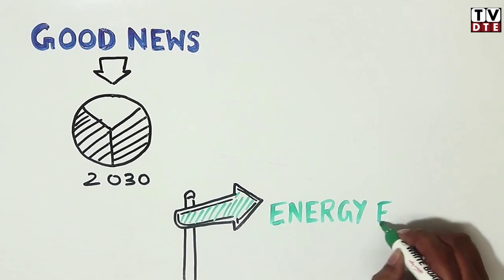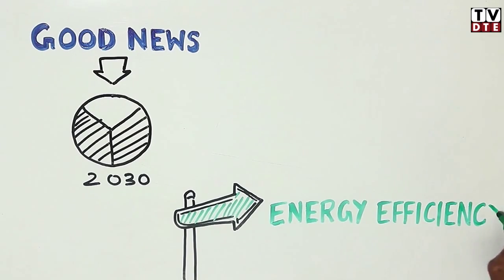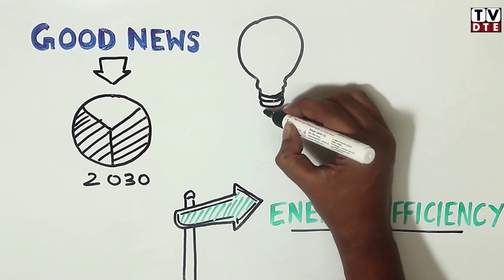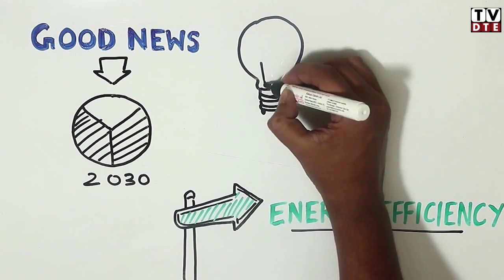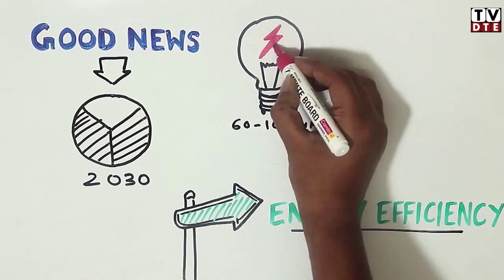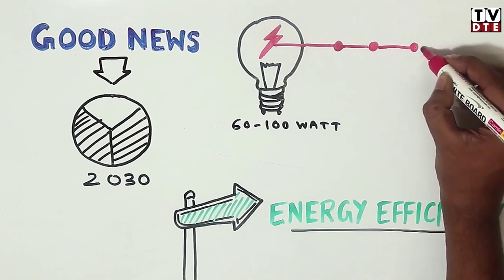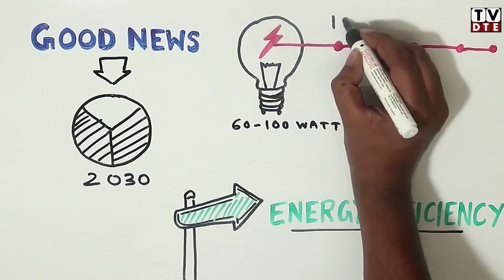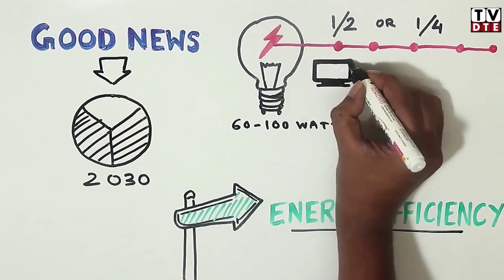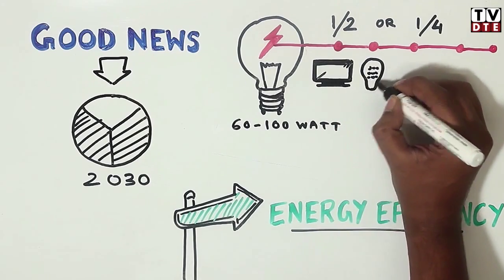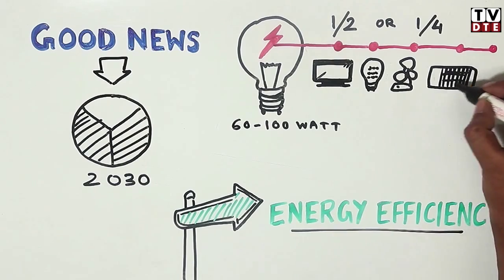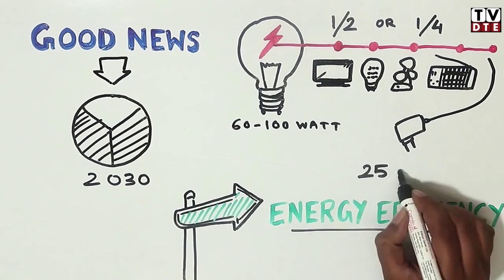The right course to take is towards energy efficiency. We have all used incandescent bulbs to light up our homes. Typically, 60 and 100 watt bulbs are used for home lighting. But today, it is possible to use a motley array of devices at half or one-fourth the power of an incandescent bulb. It is possible to run a LED TV, two LED bulbs, a table fan, a digital radio clock, and a mobile charger in about 25 watt of power.